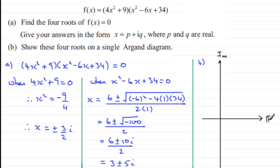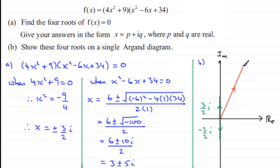First, (3/2)i is purely imaginary, so it sits on the imaginary axis — illustrated here as a vector up to (3/2)i. Its complex conjugate, -(3/2)i, is a reflection in the real axis, so that goes below. For the pair 3 ± 5i: go across three units and up five units to plot 3 + 5i, and its complex conjugate 3 - 5i is the reflection in the real axis, going three across and five down.